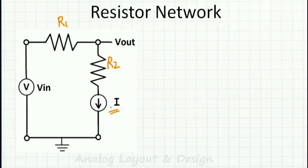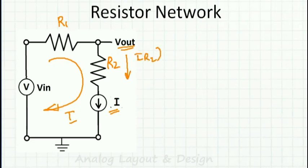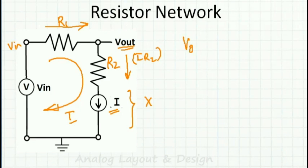Whenever I have a current source, the current in the circuit is always I. Now I can arrive at Vout. If I know the voltage drop I into R2, that is fine, but we can't measure the voltage drop across a current source because it can be anything while the current remains I. So we won't use that approach. Instead, we know Vin, and Vin minus I into R1 is Vout. So Vout equals Vin minus I into R1.